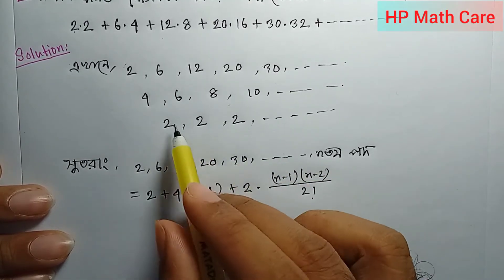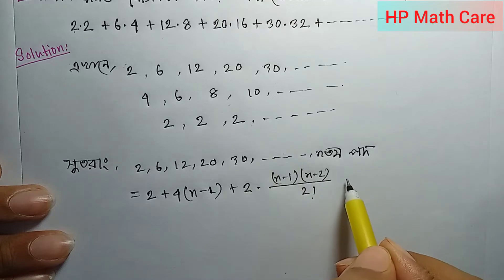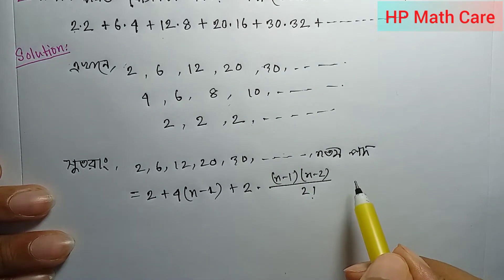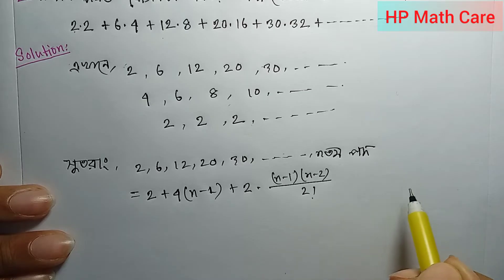If you want to write the same thing, we will write the same thing as n into n plus 1, n minus 1, n minus 2, n minus 3, by 3 factorial.